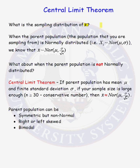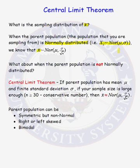We already know that if the parent population is normally distributed — in other words, all of our random variables from our parent population are normally distributed with mean mu and standard deviation sigma — then x-bar, our sample mean, is exactly normally distributed with the same center as our parent population.